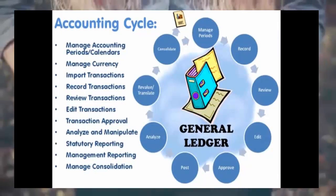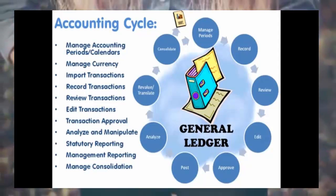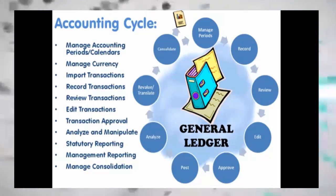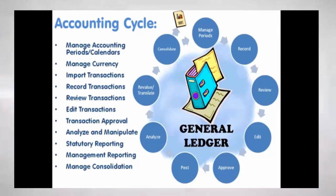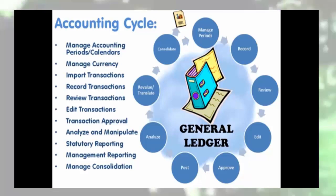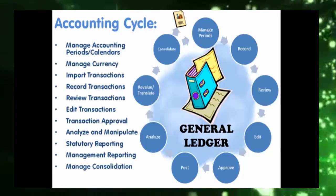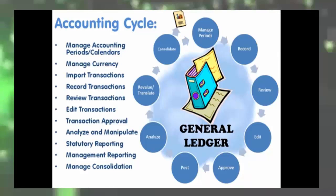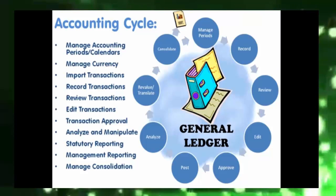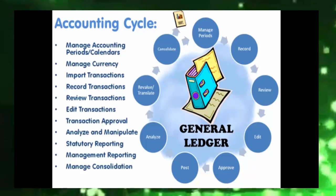Accounting Cycle. Before you can start recording financial transactions in any books you need to have some basic information available. The minimum required information is: the nature of parties entering into the transaction, which leads to having a chart of accounts; the date when the transaction took place, which leads to having accounting periods and calendars; and the money involved in the financial transaction, which leads to having currencies.